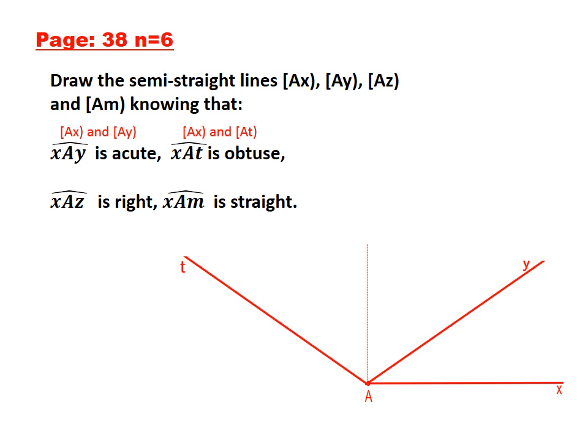So we draw here the second semi-line AT. XAT is an obtuse angle; it is more than 90 degrees and also less than 180 degrees.